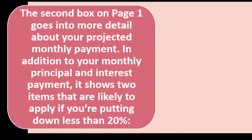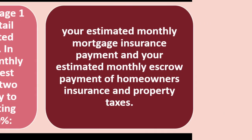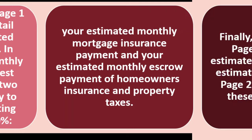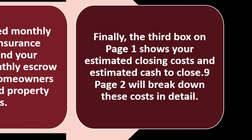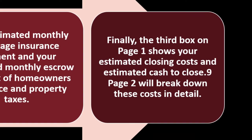The second box on page one goes into more detail about your projected monthly payment. In addition to your monthly principal and interest payment, it shows your estimated monthly mortgage insurance payment and estimated monthly escrow payment for homeowners insurance and property taxes — items likely to apply if you're putting down less than 20%. The third box on page one shows your estimated closing costs and estimated cash to close, which page two breaks down in detail.